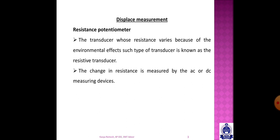A transducer looks at the physical quantity and converts it to an electrical quantity — an electrical signal. We convert a physical quantity in the environment into a resistance readable by a DC measuring device.